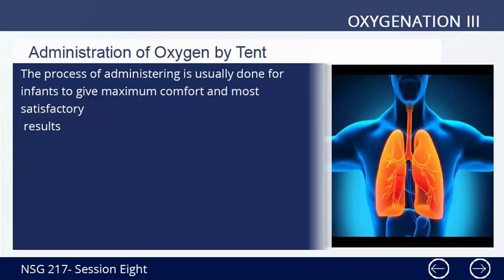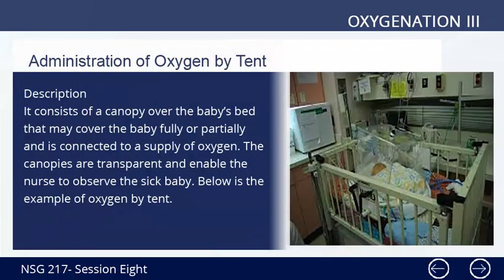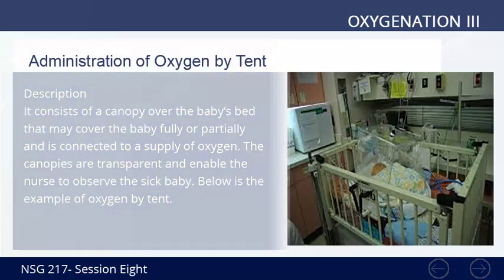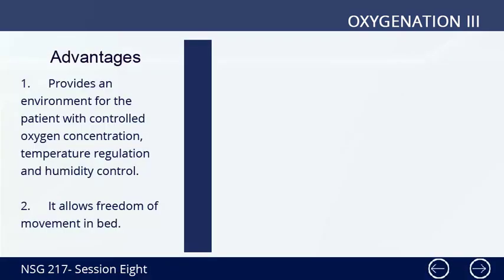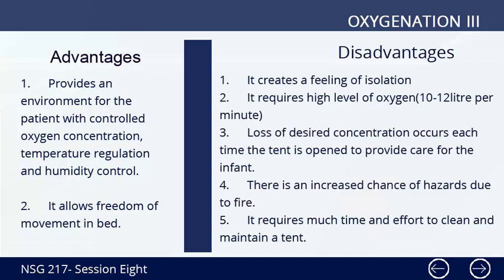Administration of oxygen by tent is usually done for infants to give maximum comfort and most satisfactory results. It consists of a canopy over the baby's bed that may cover the baby fully or partially and is connected with a supply of oxygen. The canopies are transparent and enable the nurse to observe the sick baby.